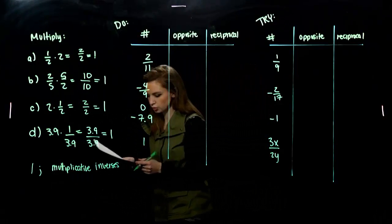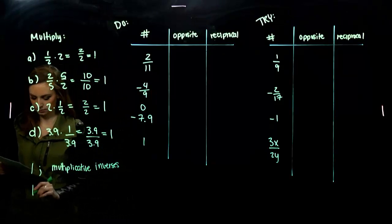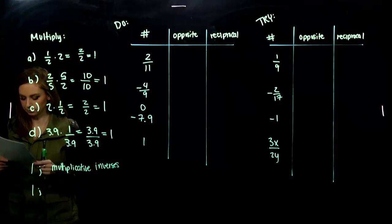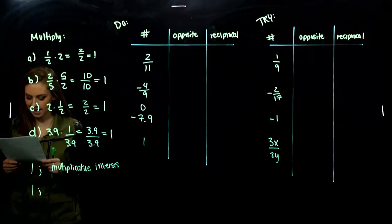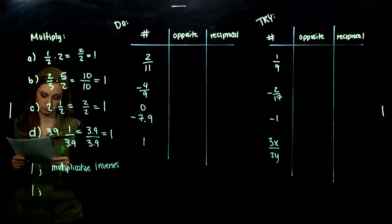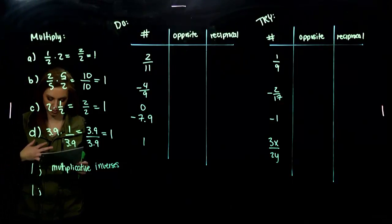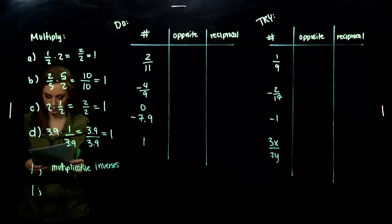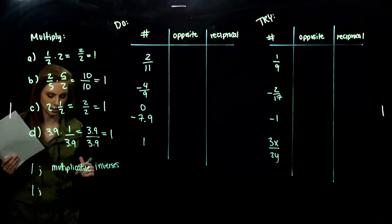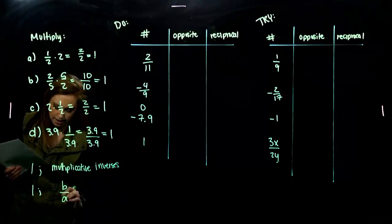So, two numbers whose product is 1 are called reciprocals, or multiplicative inverses, of each other. For example, if A is not equal to 0, the reciprocal of A is 1 over that number. The reciprocal of 1 over the number is the number itself, A. So, the reciprocal of a non-zero number, A over B, is what? Flipping it upside down. B over A.